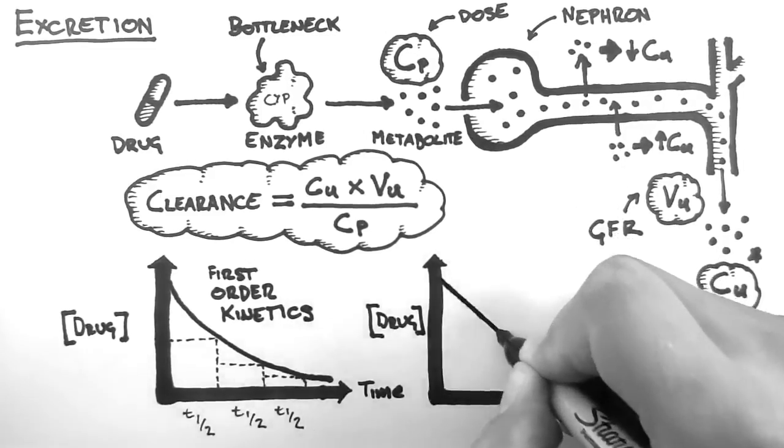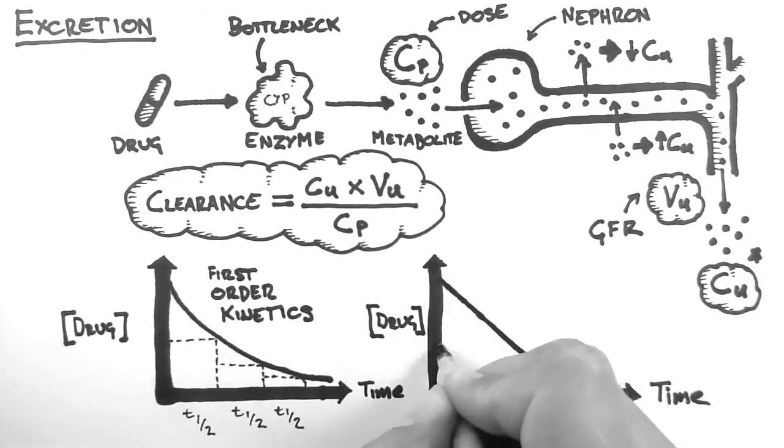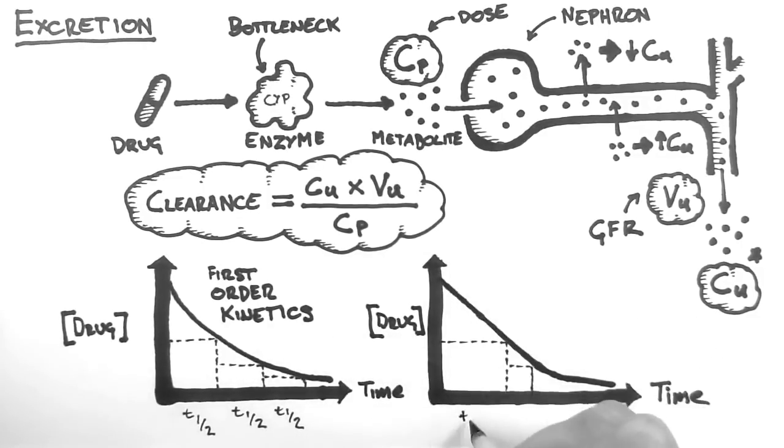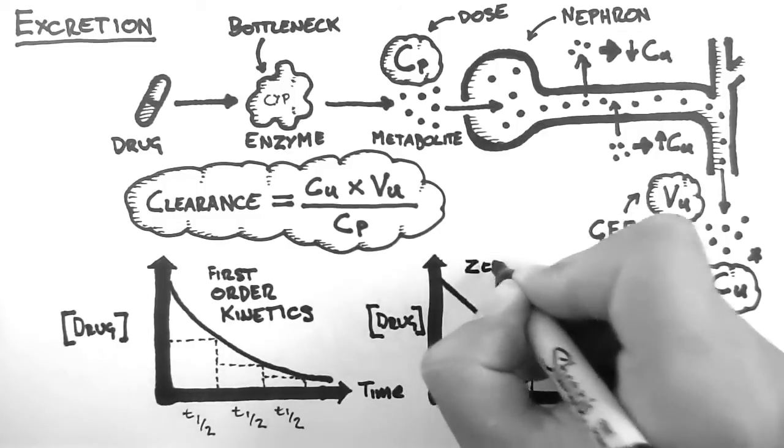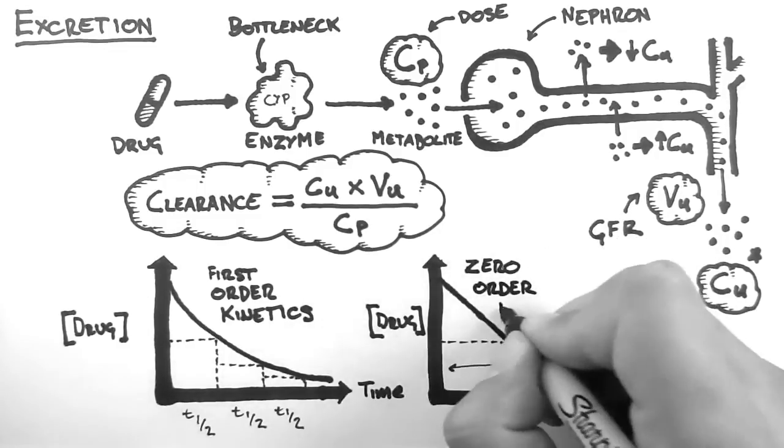Hence, we end up with a linear graph like this. Note that in this case, the half-life is not a constant value anymore. It is dependent on the current concentration of the drug. When a drug behaves like this, we call it zero-order kinetics.